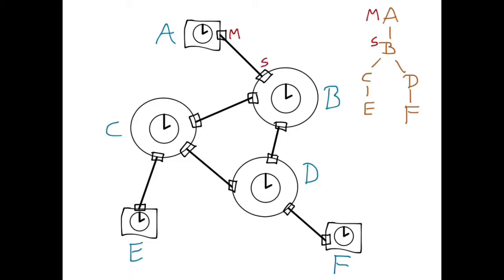Looking at the next level of the hierarchy, B will be the master of clock C and D. The corresponding ports of clock B will therefore be in the master state. Since B is the master of C and D, clocks C and D will be slaves of B, and their corresponding ports will be in the slave state.